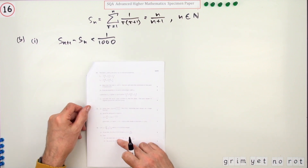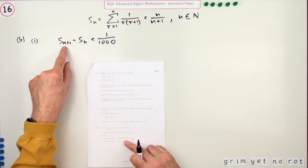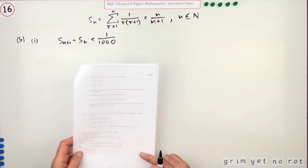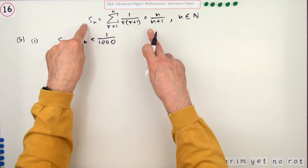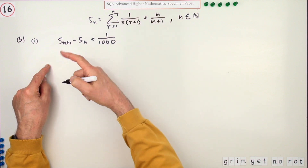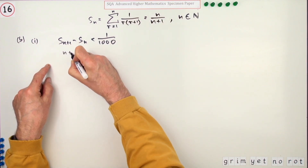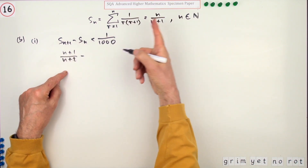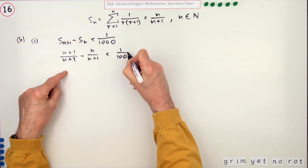For part B(i), find the least value of n such that S(n+1) − S(n) is less than 1/1000. There are three marks allocated. Using the formula: S(n+1) = (n+1) over (n+2), and S(n) = n over (n+1), so the difference is (n+1)/(n+2) − n/(n+1), and that must be less than 1/1000.